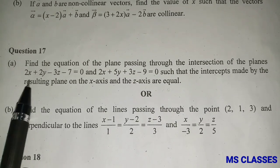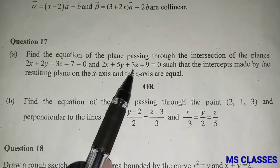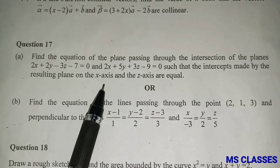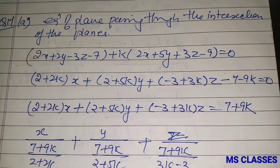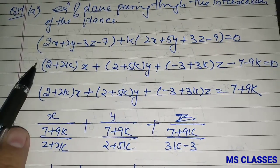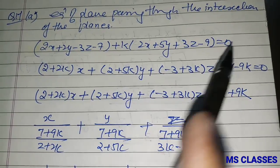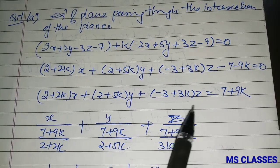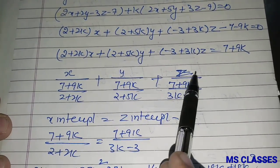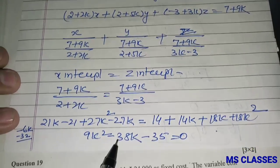Find the equation of the plane through the intersection of 2x + 2y - 3z - 7 = 0 and 2x + 5y + 3z - 9 = 0 such that x-intercept equals z-intercept. Write the family of planes as P₁ + k·P₂ = 0. Express in intercept form; equating x and z intercepts and solving for k gives the required plane equation.